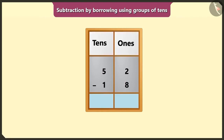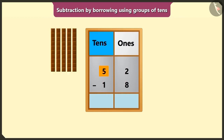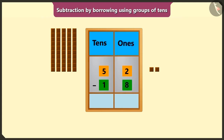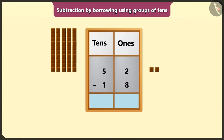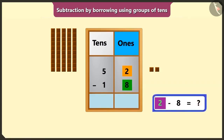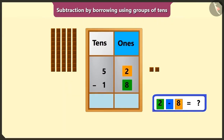You had 52 chocolates, which means 5 tens and 2 ones chocolates. We ate 18, meaning 1 ten and 8 ones chocolates. So, here we have to perform 52 minus 18. First of all, we will perform subtraction of the numbers in the box of ones. But here, 2 is smaller than 8. So, how can we subtract a big number from a small number? We cannot subtract a big number from a smaller number.